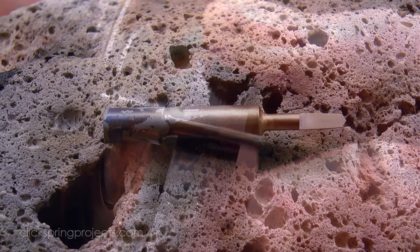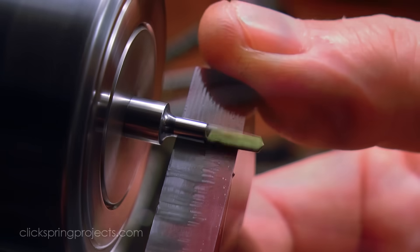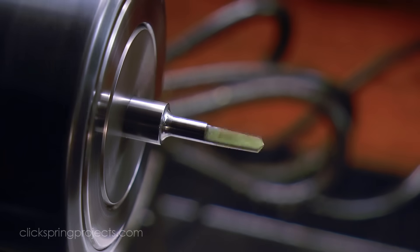A synthetic ruby slip stone works well to bring the cylindrical section to final dimension as well as bring up the cutting edge.